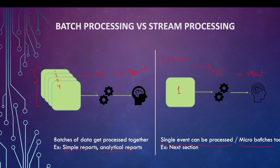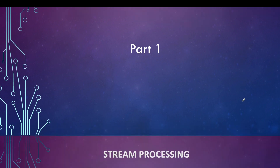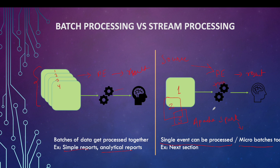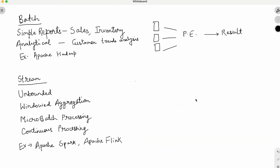In certain cases, micro-batches can also be processed. Apache Spark is a micro-batch framework, which means a collection of records — say the second and third records — are sent to the processing engine together. Spark processes them all at once and generates the result, so it's not truly continuous processing. The time fraction is so small that it feels like real-time processing, but ultimately Spark works in micro-batch mode.